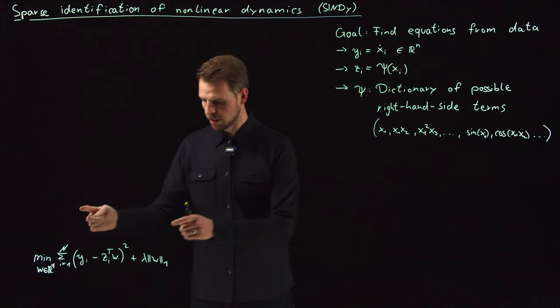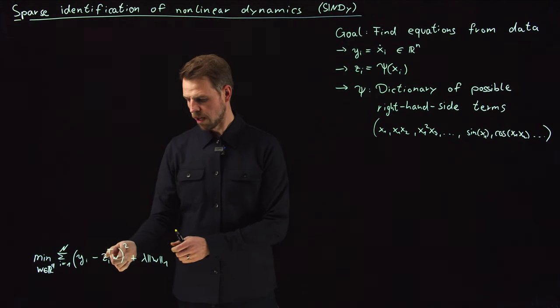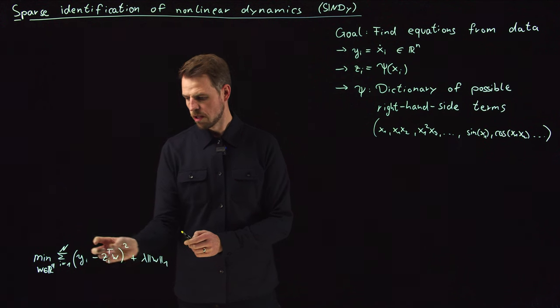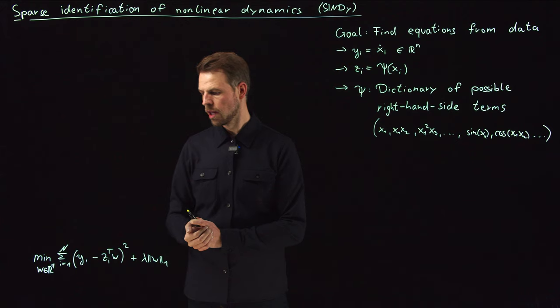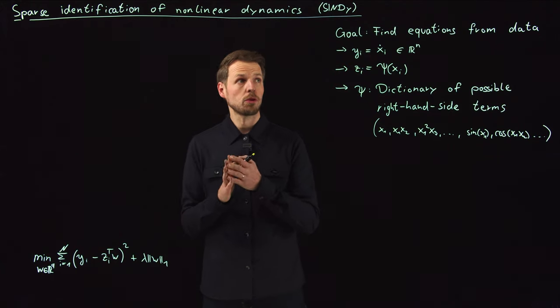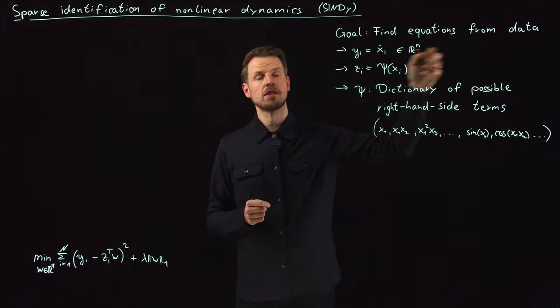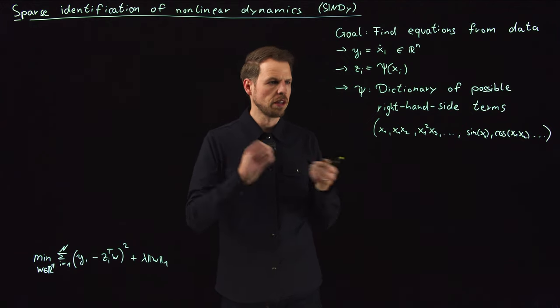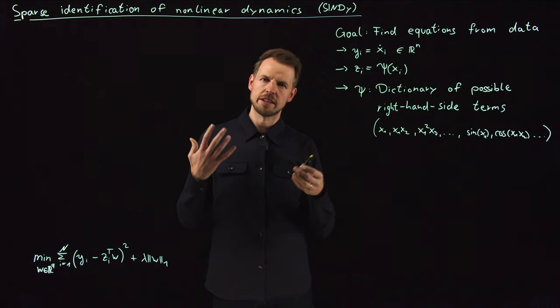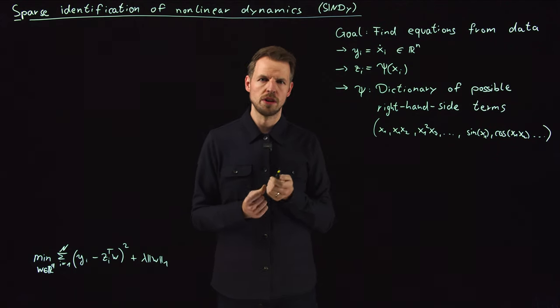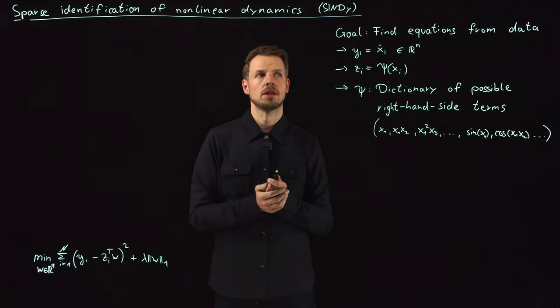We have seen that this is our lasso problem. Minimize W times Z, so the linear model minus the output, plus this regression term. What we can do now is we can try to find equations from data, which is really nice. Let's say you have experimental data, you have measurements, and you say, maybe I can identify what gave rise to these data, to these dynamics.